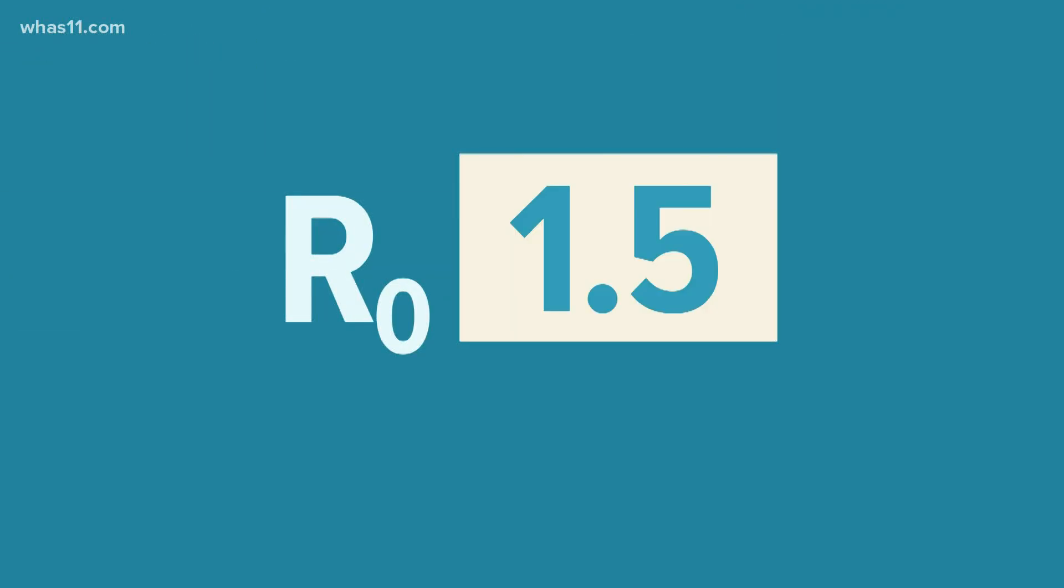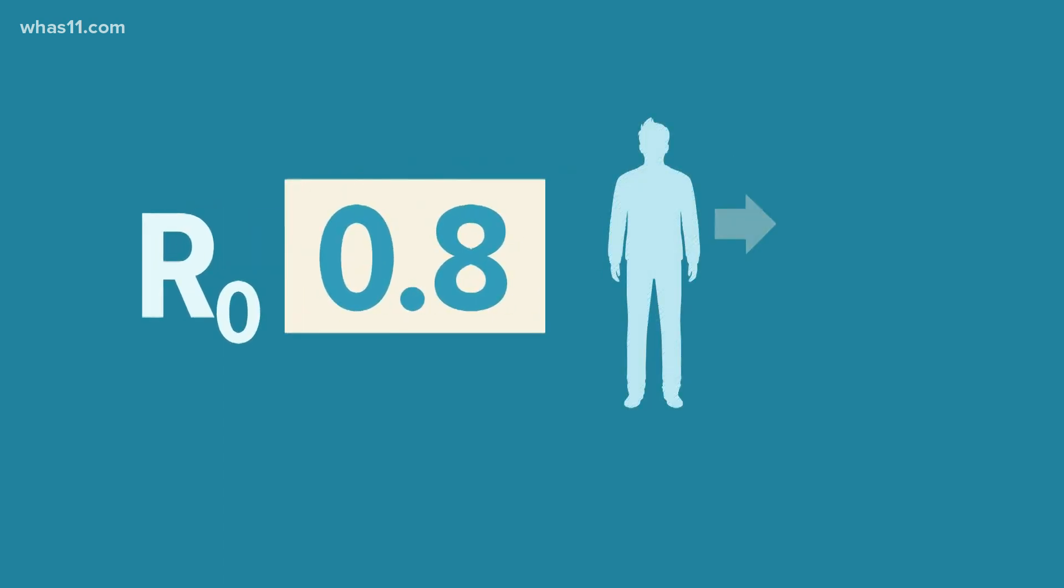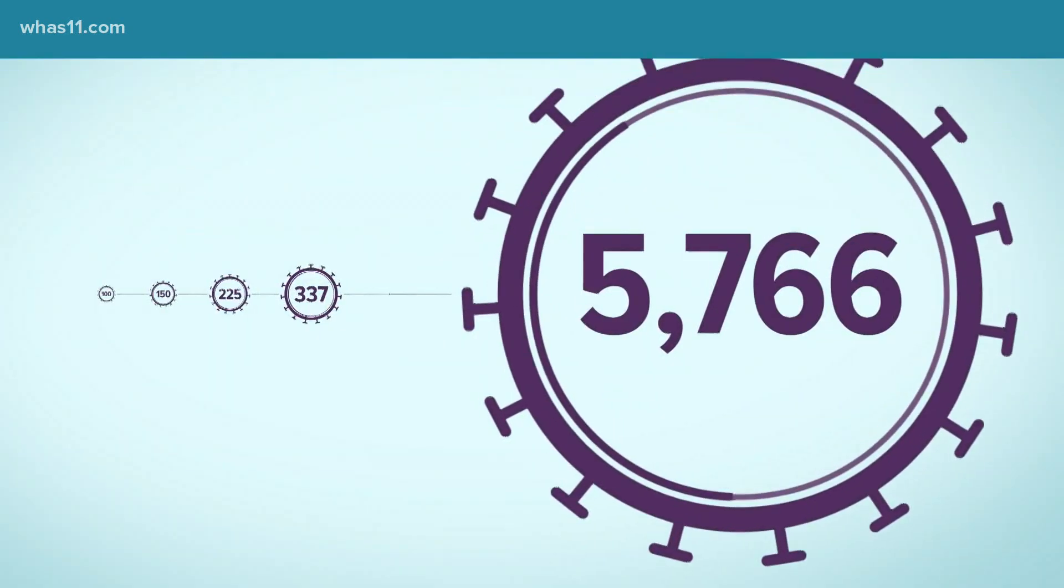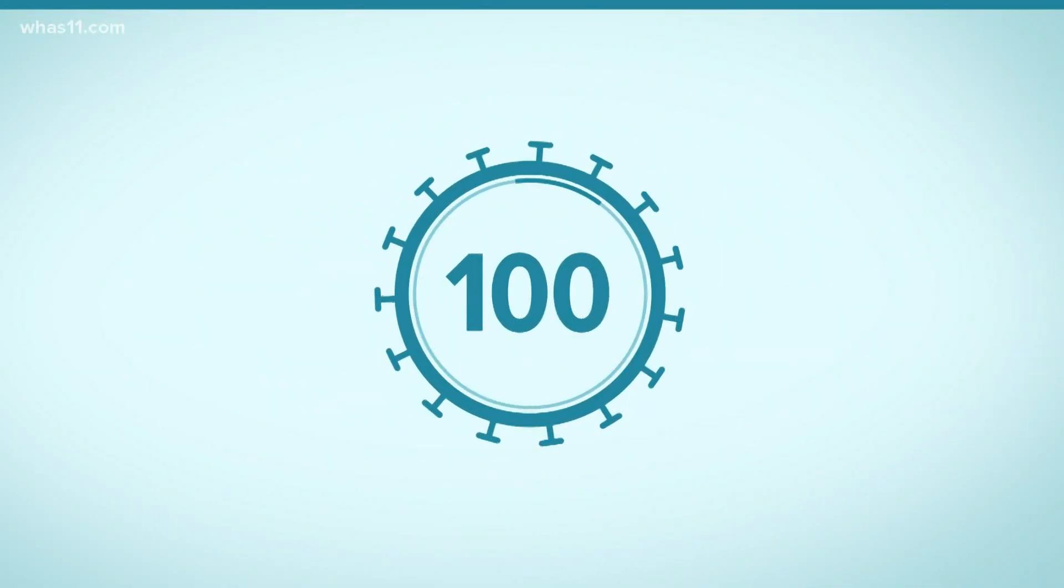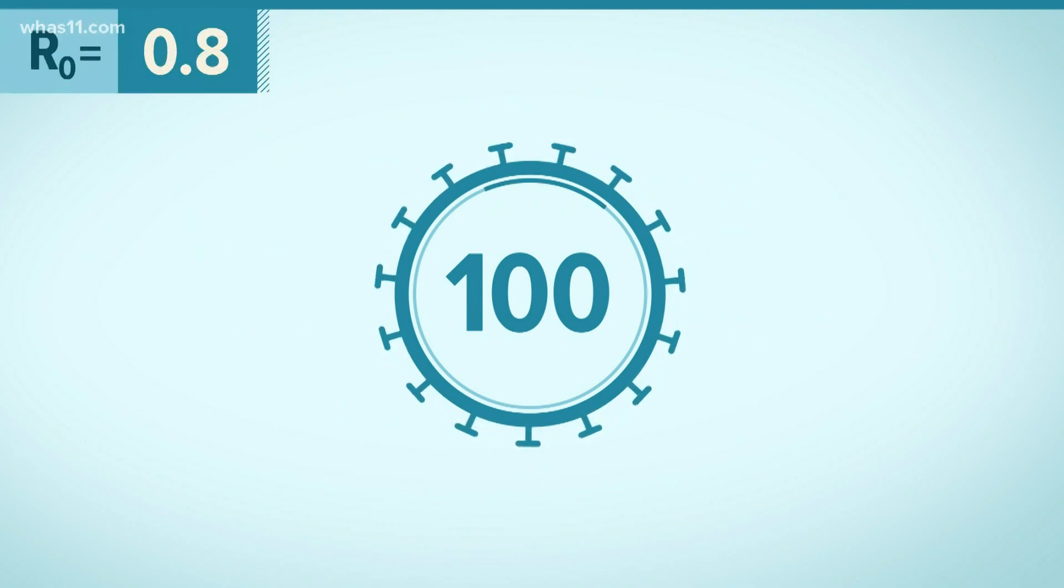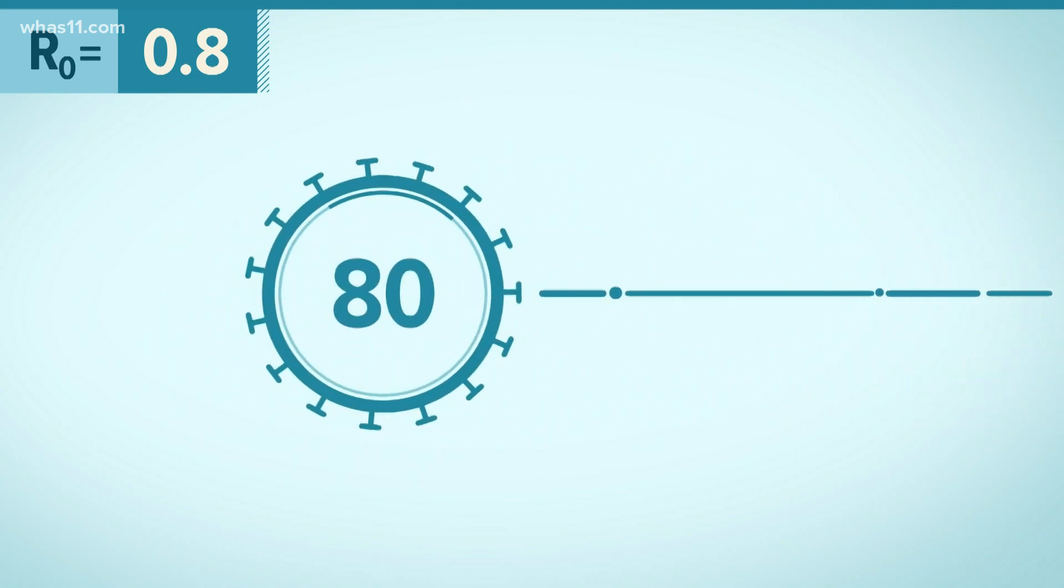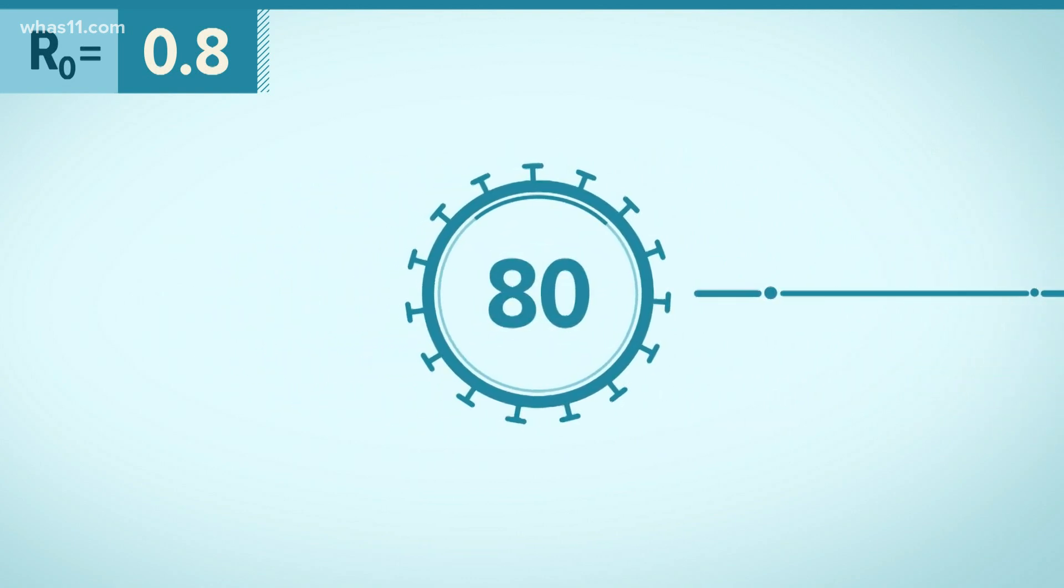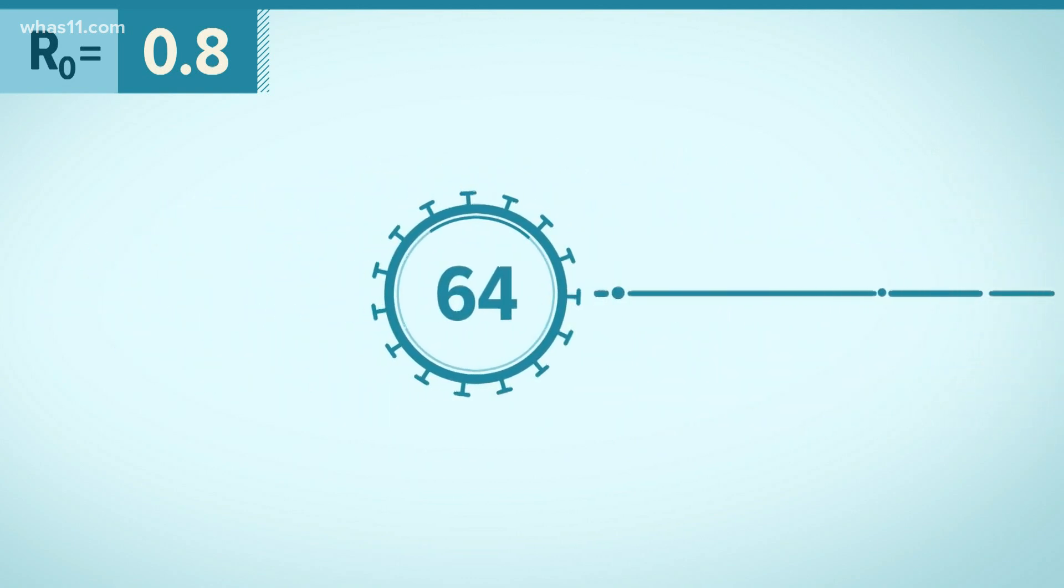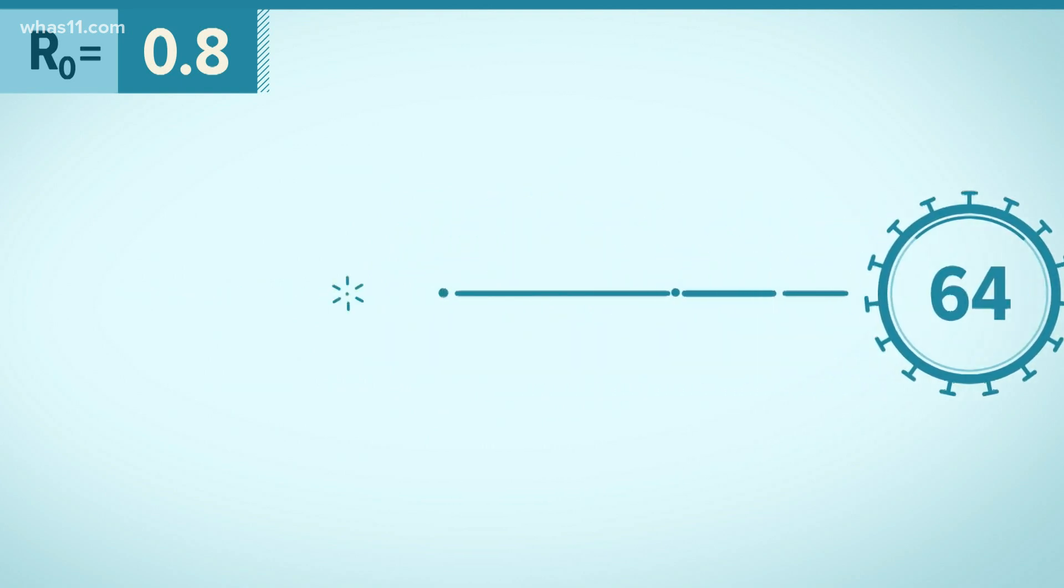But now let's see what happens if the number is less than one, say 0.8. Now each sick person would pass the disease along to fewer than one other person. So if we go back to that same group of 100, but infect them with a disease of an R-naught of 0.8, that group of 100 would only infect 80 new people. Those 80 would infect 64, and then those 64 would only infect 51 people.